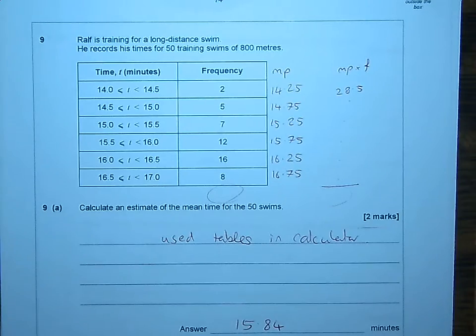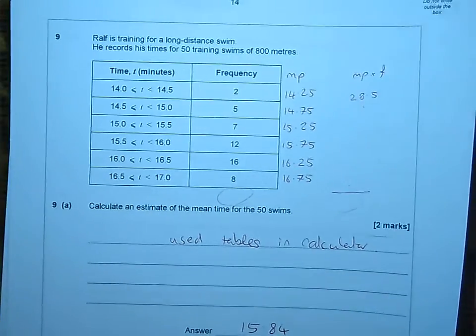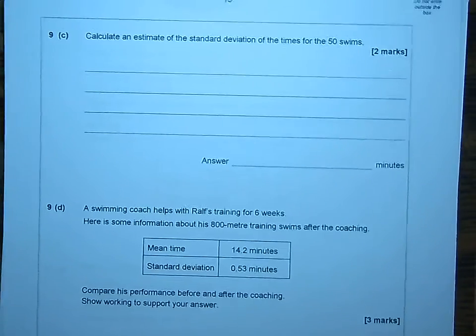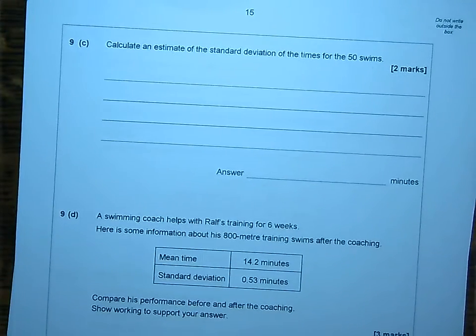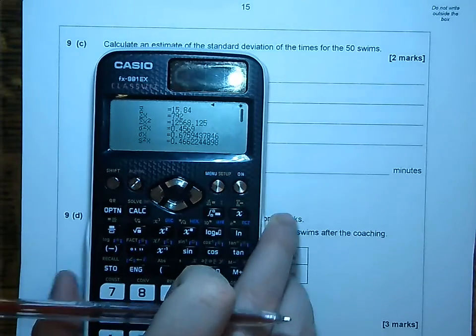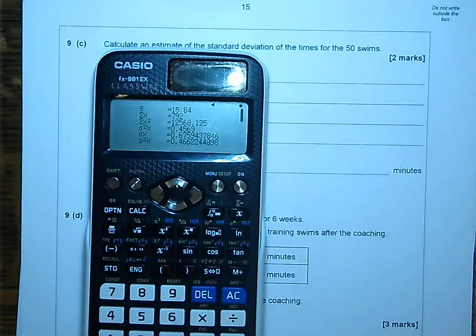That's right. Now, over the page, we've got another question, which is calculate an estimate of the standard deviation of the times for the 50 swims. No, no, no, we don't want to do any extra maths. What we've got here is the calculations on our screen.